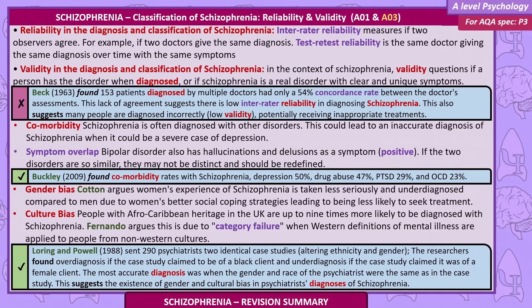Reliability and validity. Reliability in the diagnosis and classification of schizophrenia. Inter-rater reliability measures if two observers agree — for example, if two doctors give the same diagnosis. Test-retest reliability is the same doctor giving the same diagnosis over time with the same symptoms.